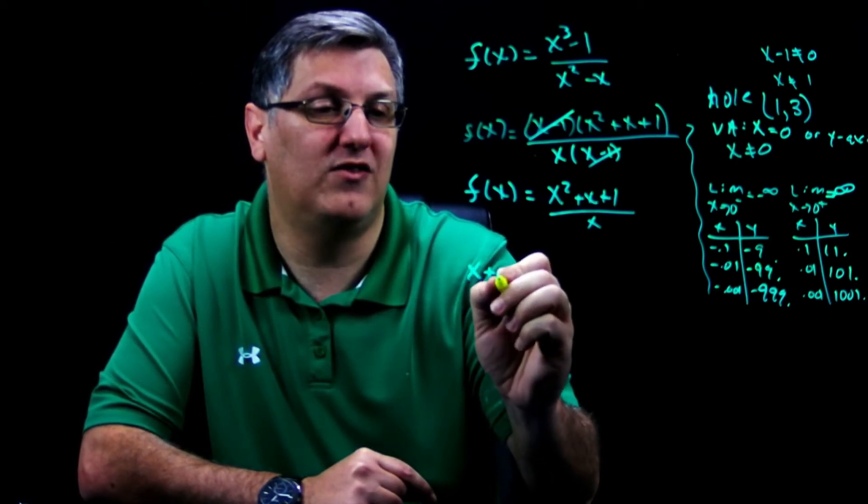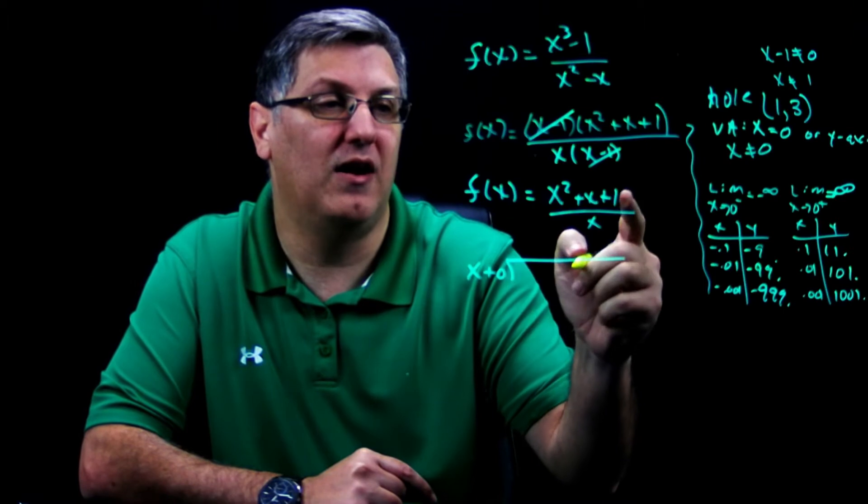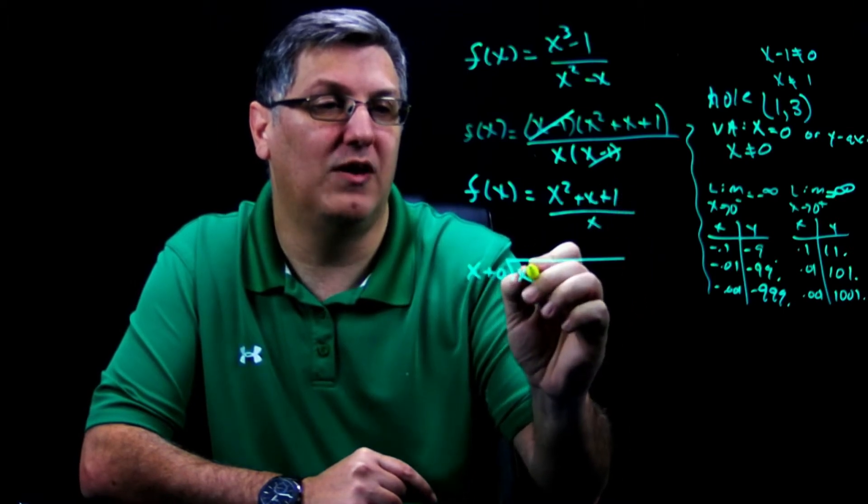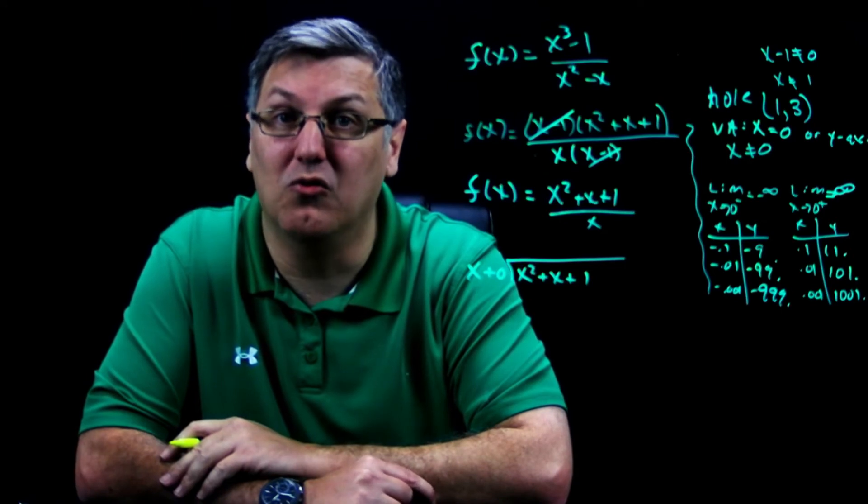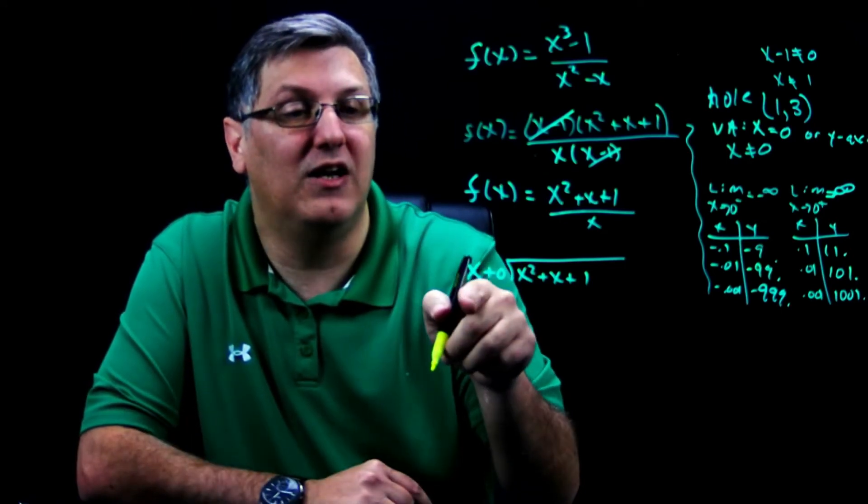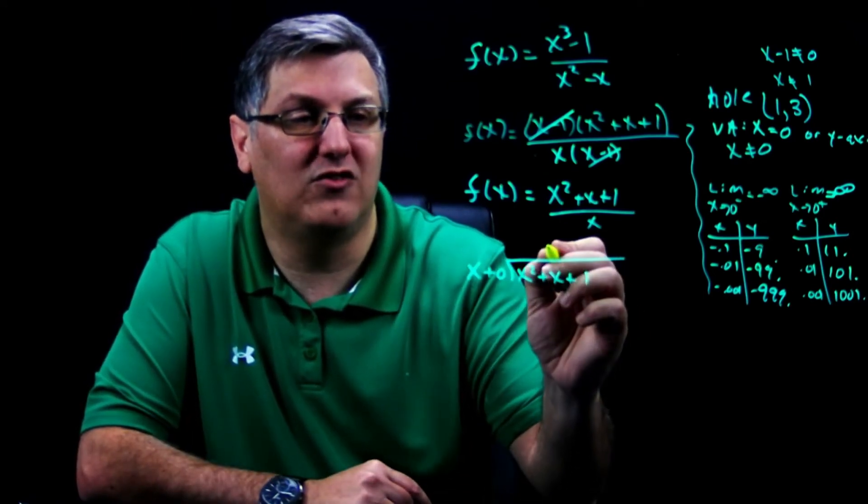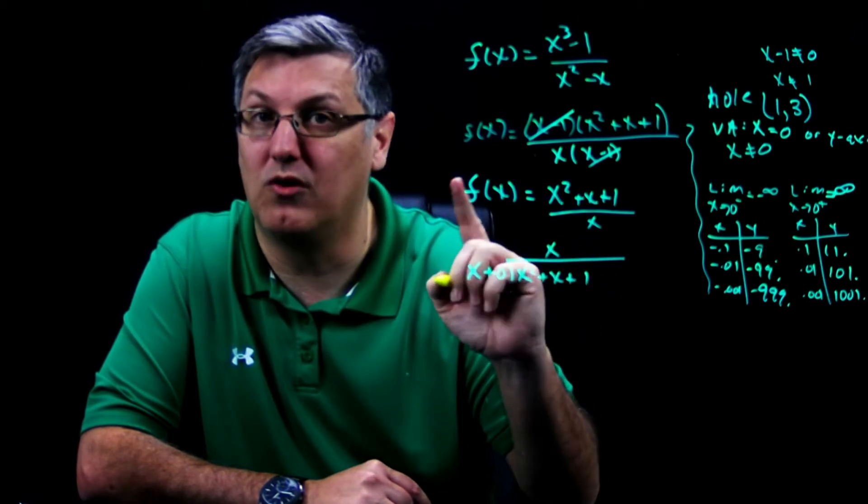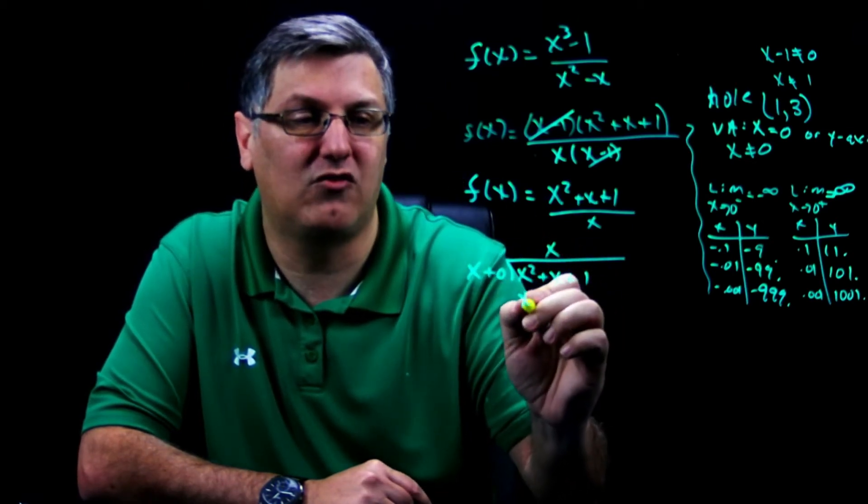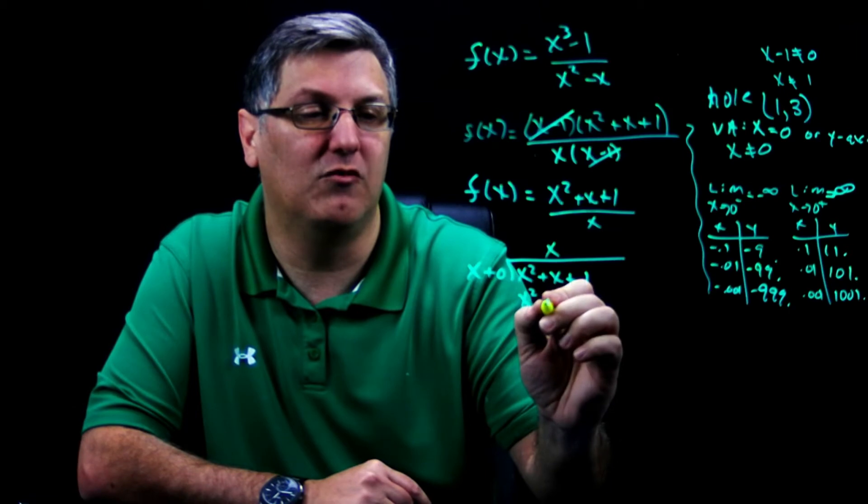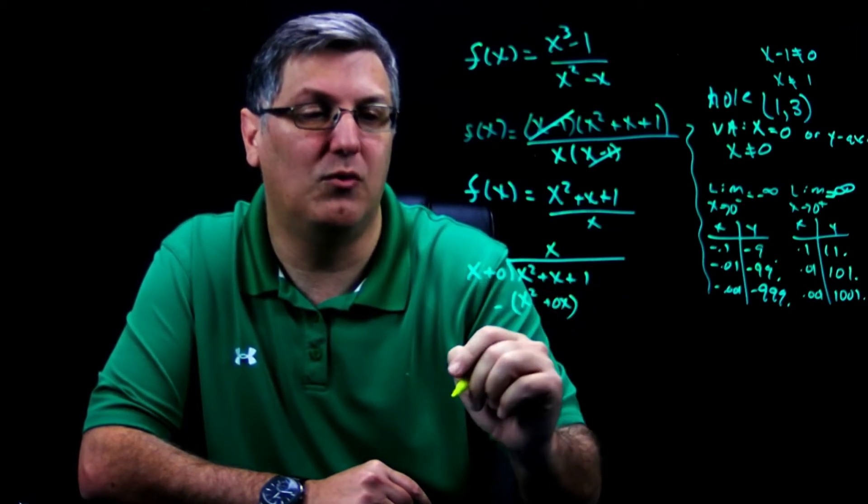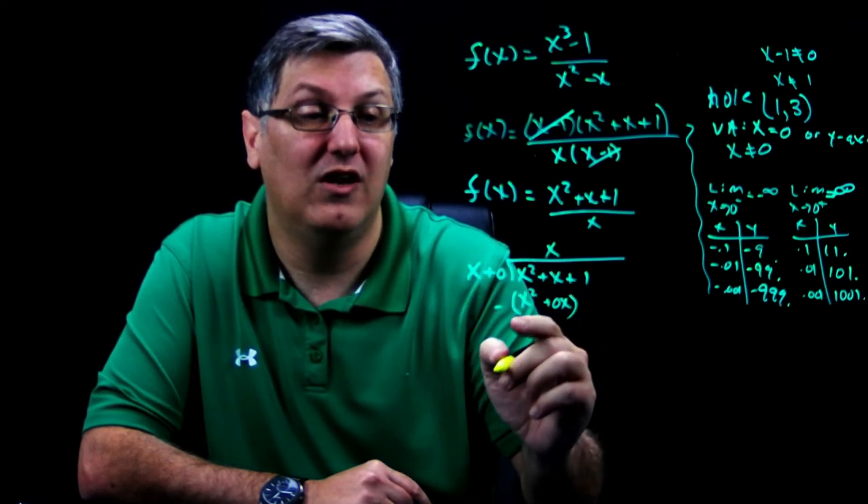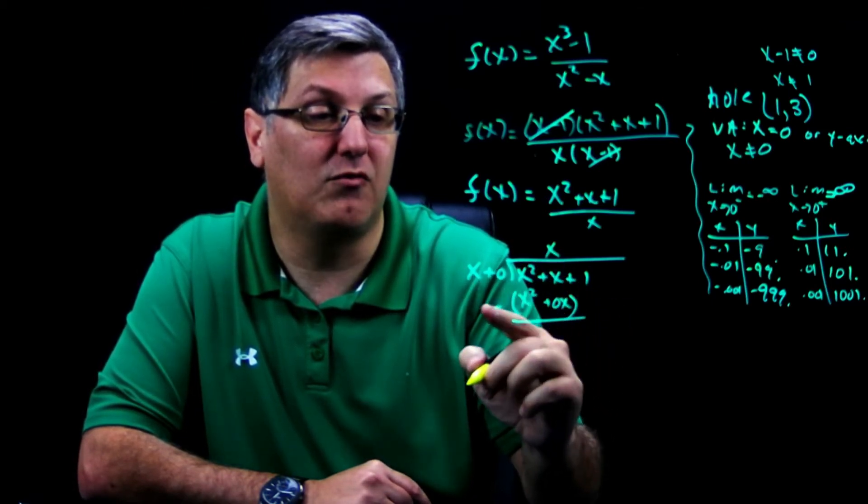x plus zero divided by my dividend, which is going to be x squared plus x plus one. And let's do long division. How many times does x go into x squared? Well, that just goes in x times, and we're going to multiply x times x, gives me x squared. x times zero gives me plus zero x. I'm going to subtract this whole thing. x squared minus x squared gives me zero, and x minus zero gives me x. I bring down my plus one.